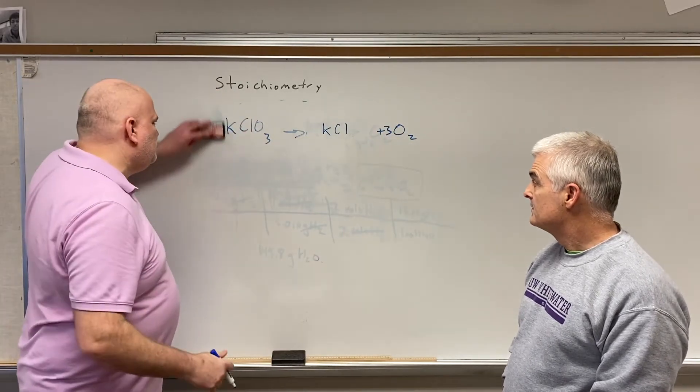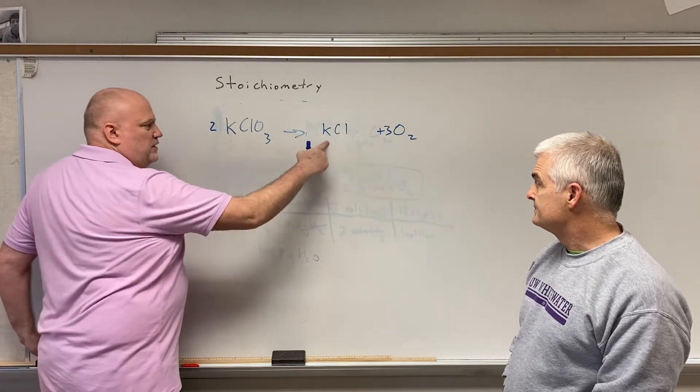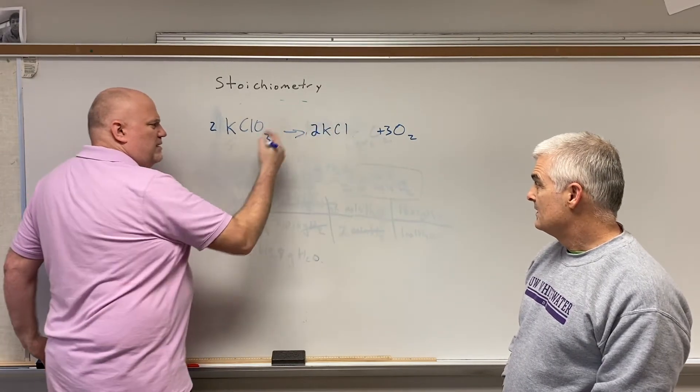Yep. Now, when you do that, though, doesn't it change the other variables as well? The KCl is going to have to be a... Two K's here. We only have one K here. If we put a two, wouldn't that balance out? That's awesome.